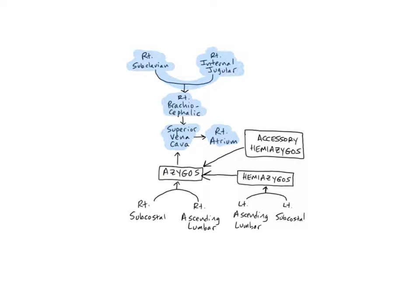Although these veins drain some regions of the thorax, most of the organs and tissues of the thorax are drained by a vein network called the azygous system. This is located on either side of the vertebral column. The veins in this system also serve as a bypass network, rerouting blood from the lower body into the superior vena cava if the inferior vena cava or hepatic portal vein become obstructed.